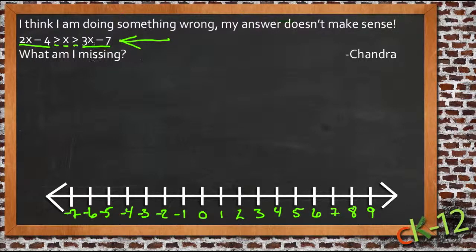We're going to use this information from a question sent in by a young lady named Chandra, who says she thinks she's doing something wrong because her answer doesn't make any sense and she wants to know what she's missing. This is the compound inequality she was given: 2x - 4 > x > 3x - 7.